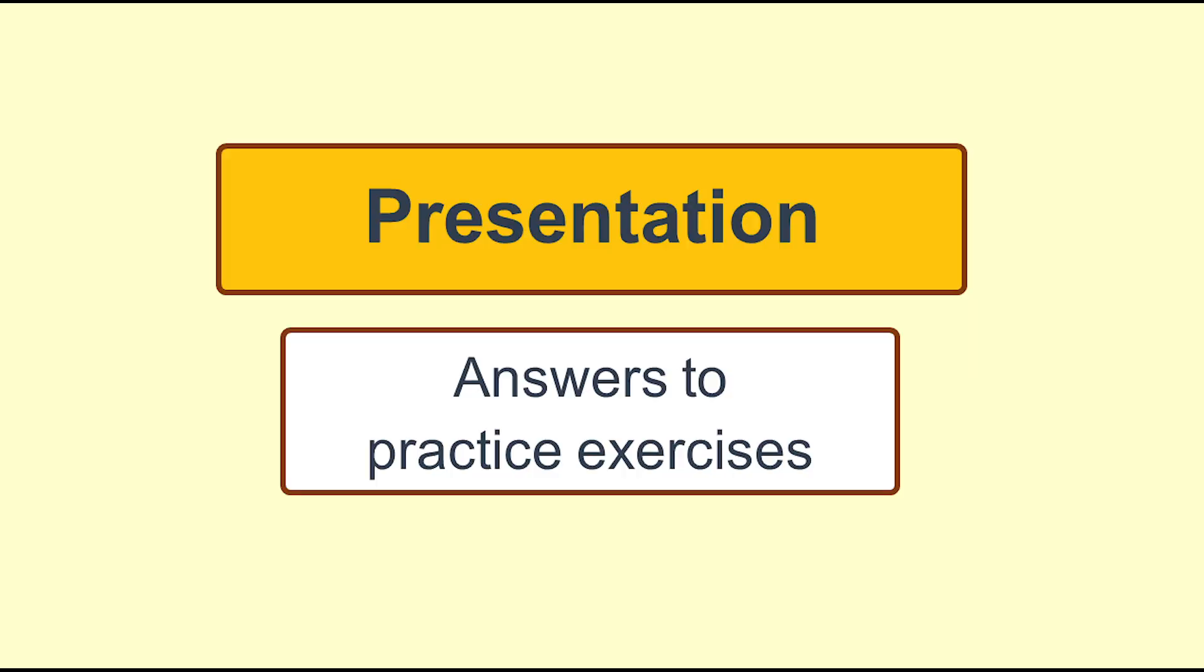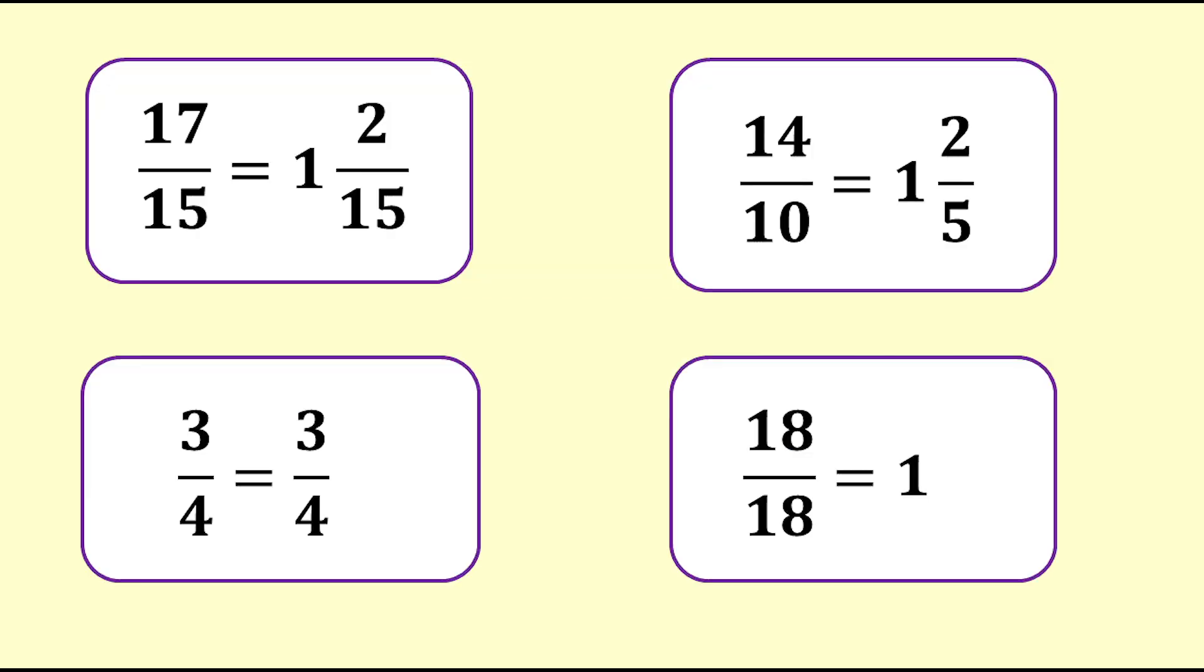Here are the answers to the practice exercises. 17 fifteenths equals 1 and 2 fifteenths. 14 tenths equals 1 and 2 fifths. 3 quarters is already tidy.